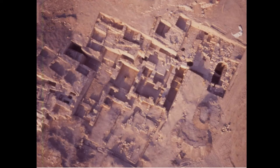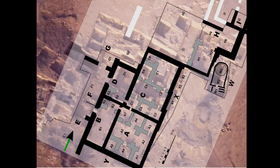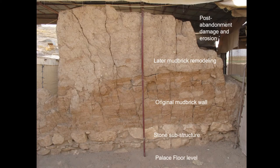At the site of Tell Mozan, this is the AP Palace dating to the mid-third millennium BC. You can see the plan overlaid on it — it's a large structure, a very important royal palace, built of a combination of stone, mud brick, plaster, and roofing beams. This is our point of departure with the various phases we understand here.